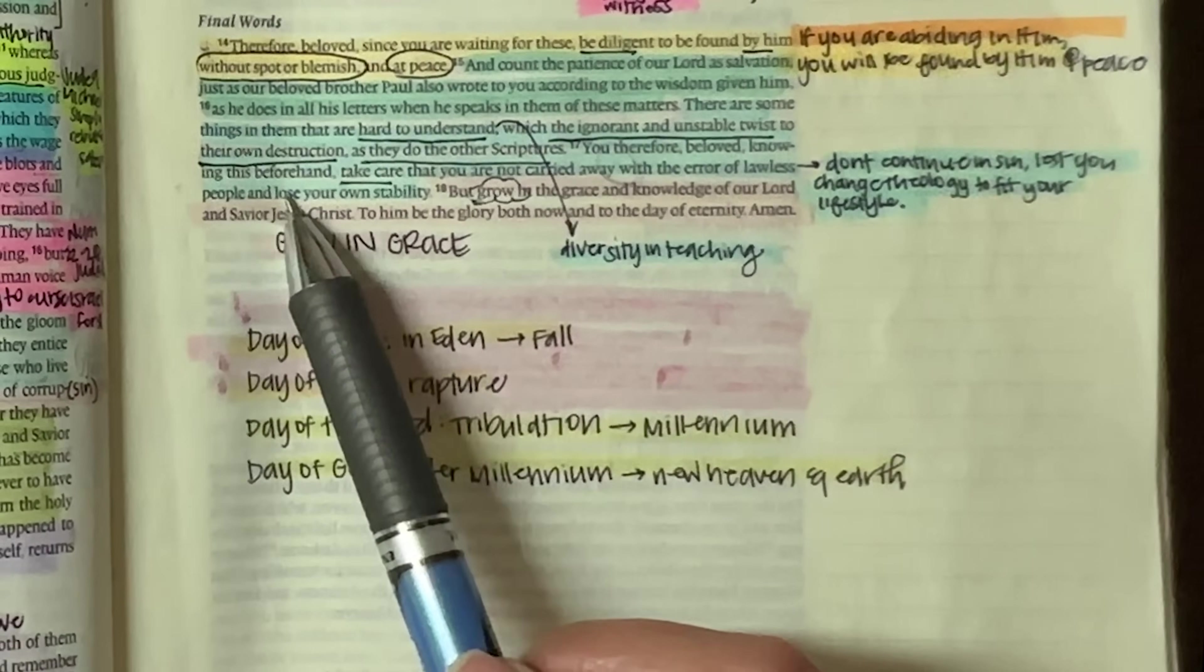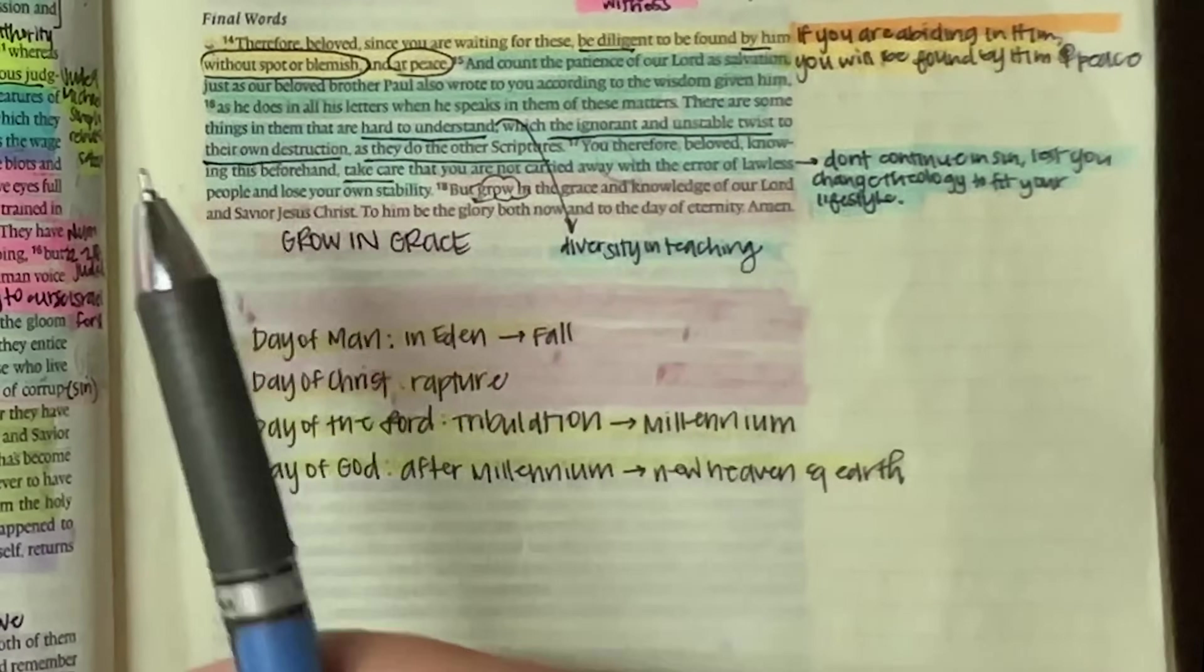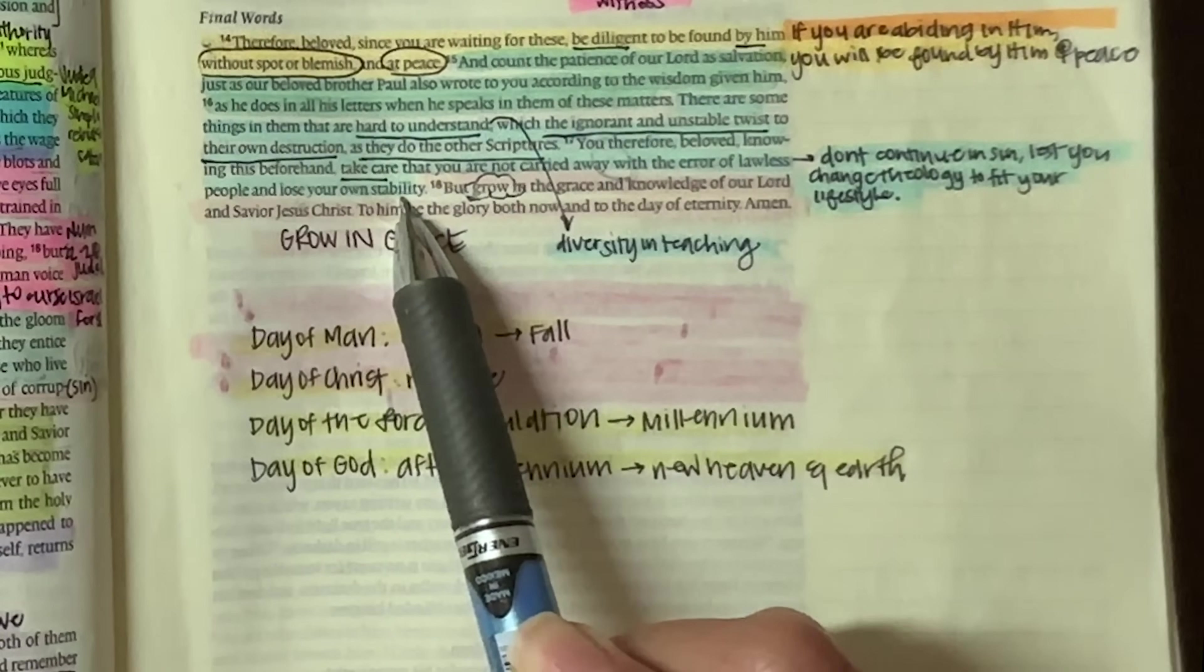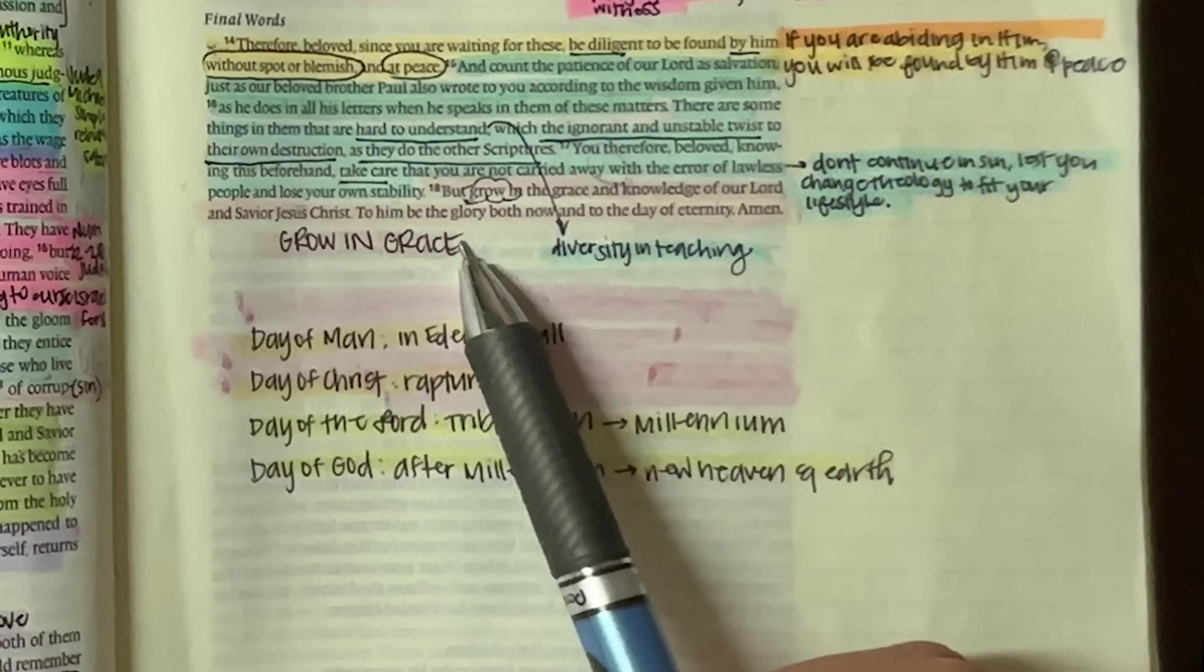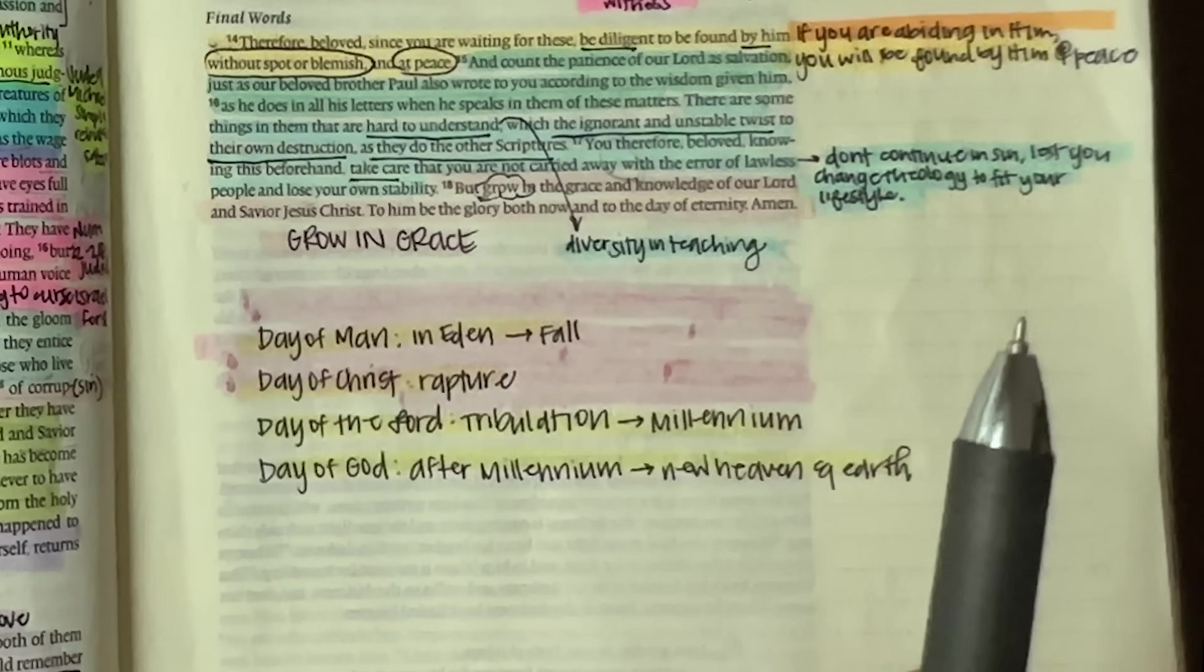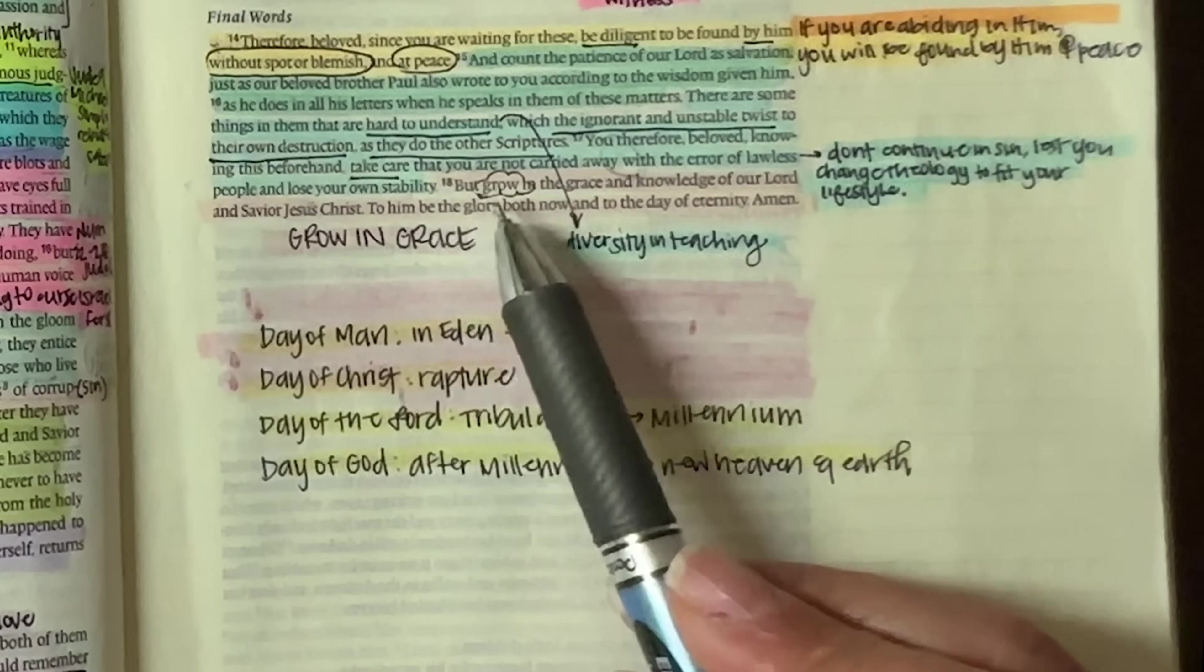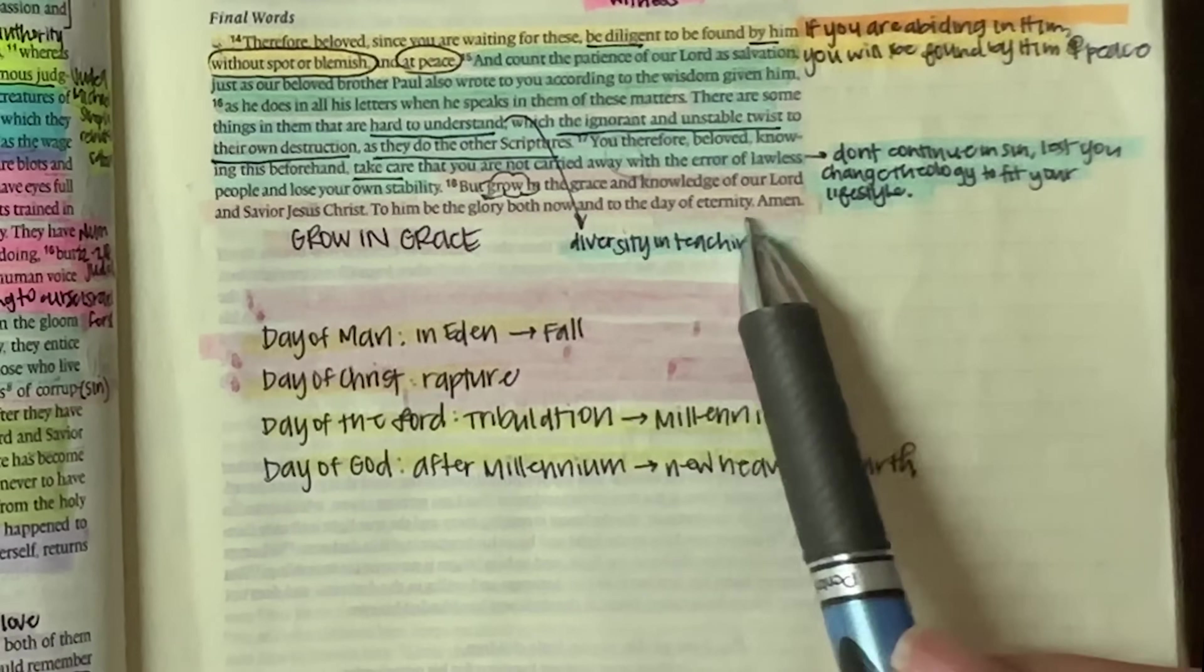You, therefore, beloved, knowing this beforehand, so the fact that you know that there are people who are going to twist the scripture to fit how they want it to sound, take care that you are not carried away with the error of lawless people and lose your own stability. So be careful when you start hearing things that take you away from the gospel. The fact that you have heard this word and you know very well that there are going to be people who try to allure you into their way of thinking, just be careful, you know? Pray about it. Pray for discernment. Pray that the Lord reveals to you, Holy Spirit. His whisper will be greater than anything they could ever say to you. So he will let you know. But grow in the grace and knowledge of our Lord and Savior Jesus Christ. To him be the glory both now and to the day of eternity. Amen.